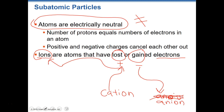Cations and anions are important terminology to remember — these are really good testable items. If an atom has more than two vowels in the name, I usually mess up the spelling, but that's okay. Ions that have lost electrons become positively charged cations; ions that have gained electrons become negatively charged anions. Make sure you know the difference between an anion and a cation.